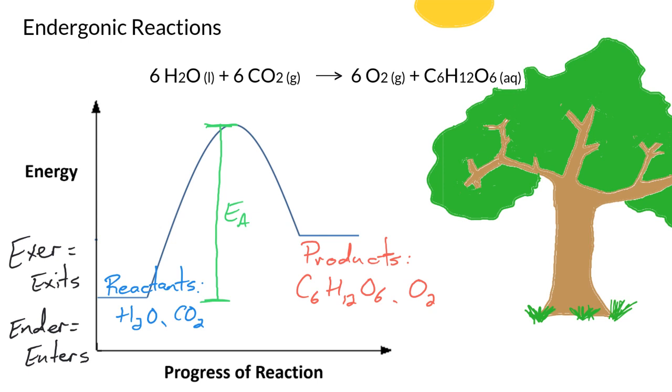If endergonic reactions require energy to be put into the reactants, then that energy has to come from somewhere. There's a few different places it can come from. In the case of photosynthesis, it comes from the light produced by the sun or by lamps that you put over plants.